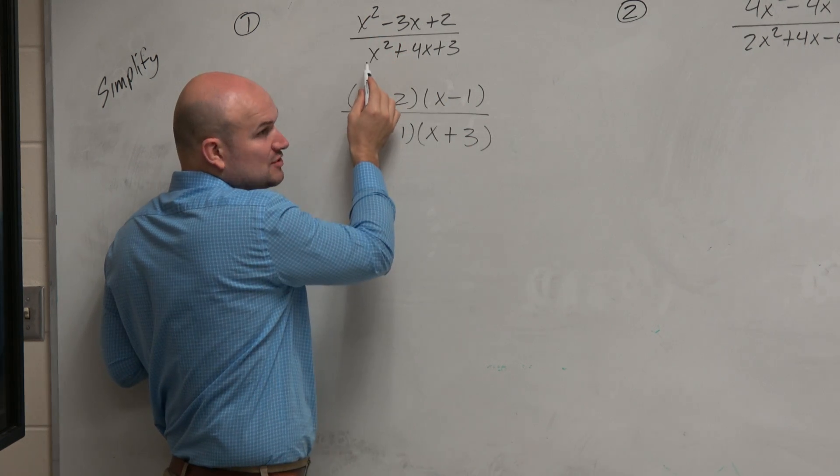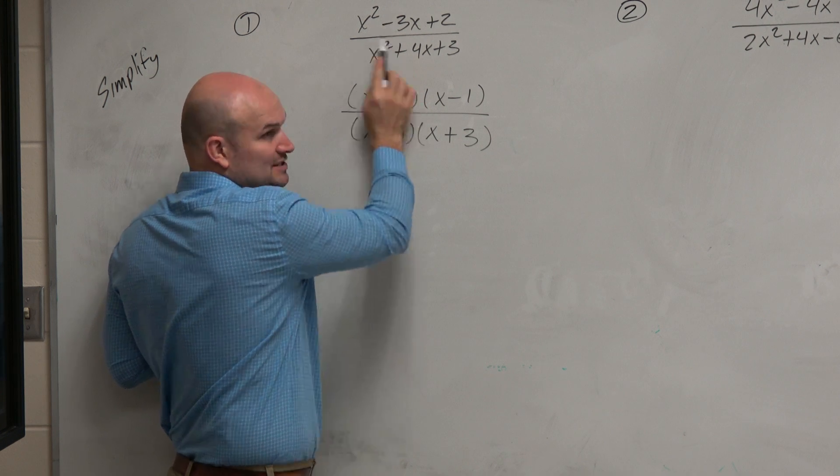See here, we can't just divide out the x-squared, because you can see that the x-squared is subtracted or added to the next term.